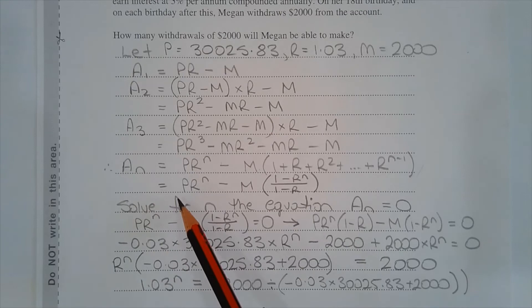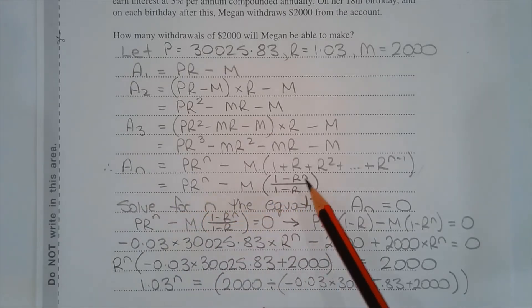So AN is equal to PR to the power of N minus M outside of 1 minus R to the power of N over 1 minus R.